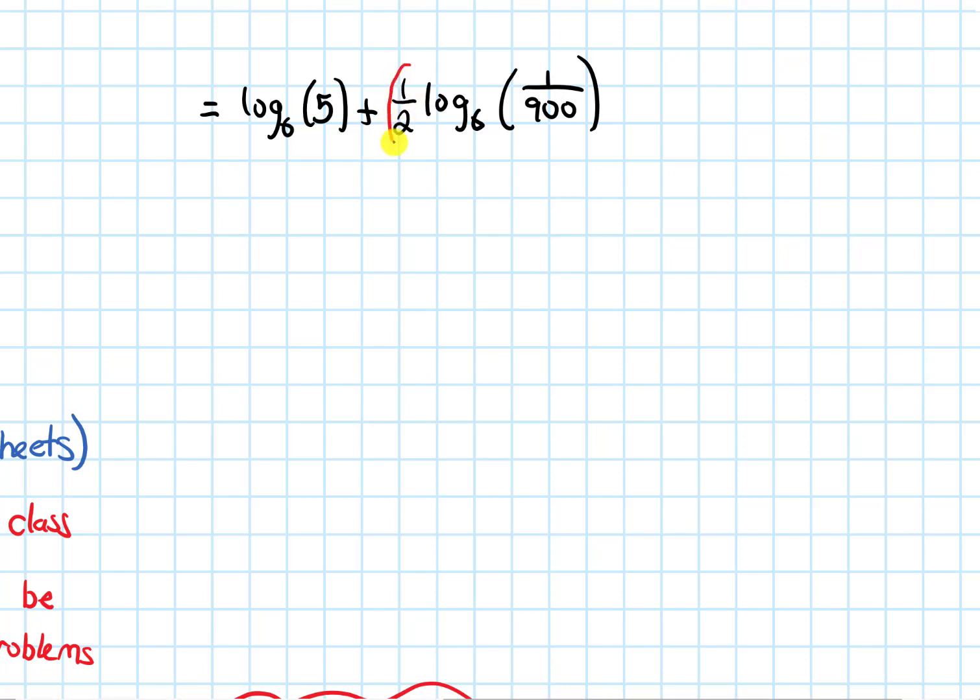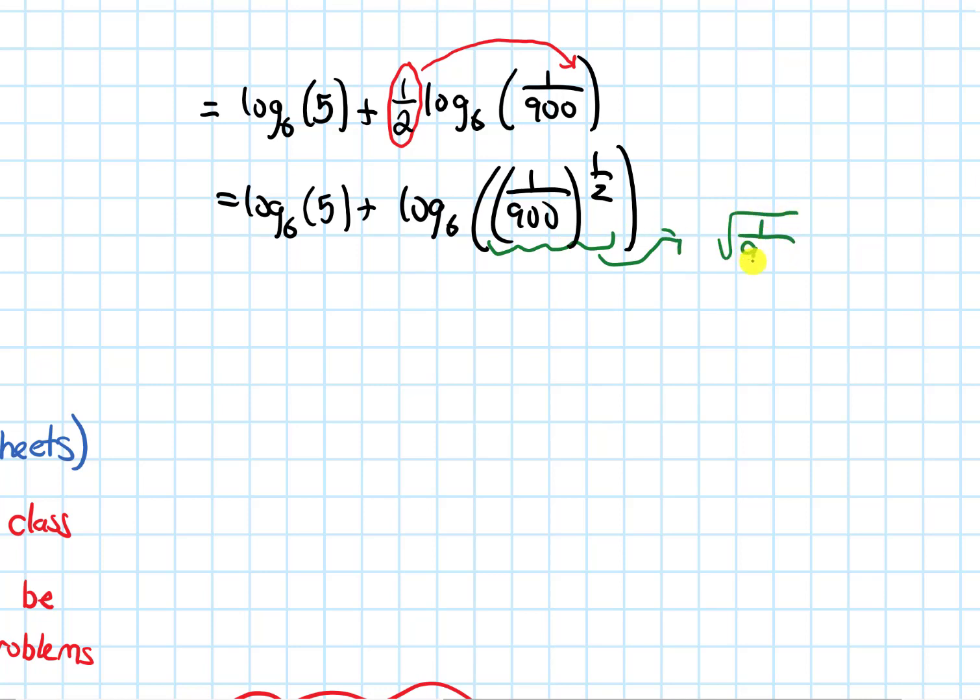Alrighty, and now I have a power in front of this log, so I can bring that power in. Sorry, I can bring this, I have a coefficient in front of the log I should say, so I can bring that number inside as a power. So that gives me log base 6 of 5 plus log base 6 of 1 over 900 to the 1 half power. And something to the 1 half power means square root. This is the square root of 1 over 900, and square root of 1 over 900 is 1 over 30.